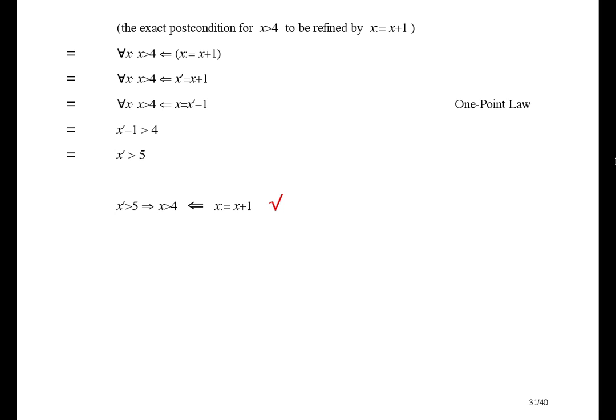On the left, we can read that as saying if the output is greater than 5, then the input was greater than 4. Or we can use the contrapositive law to turn the implication around.